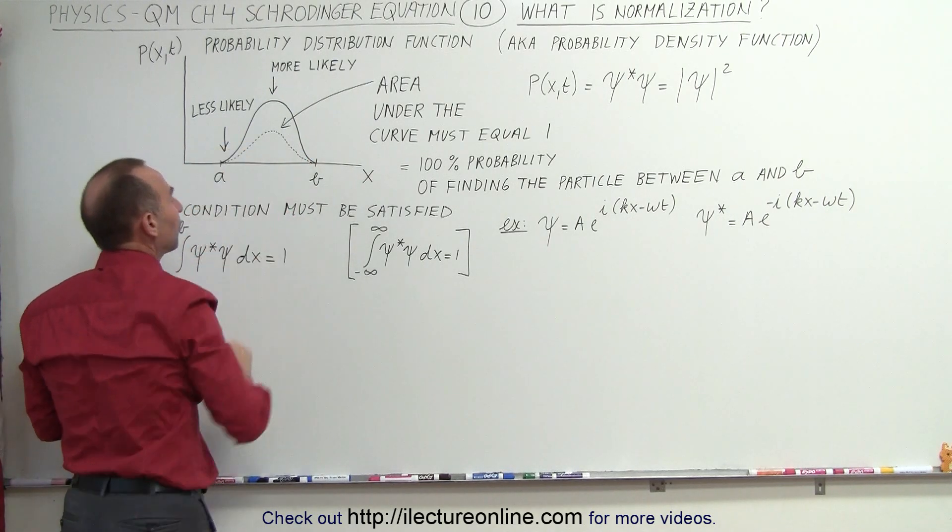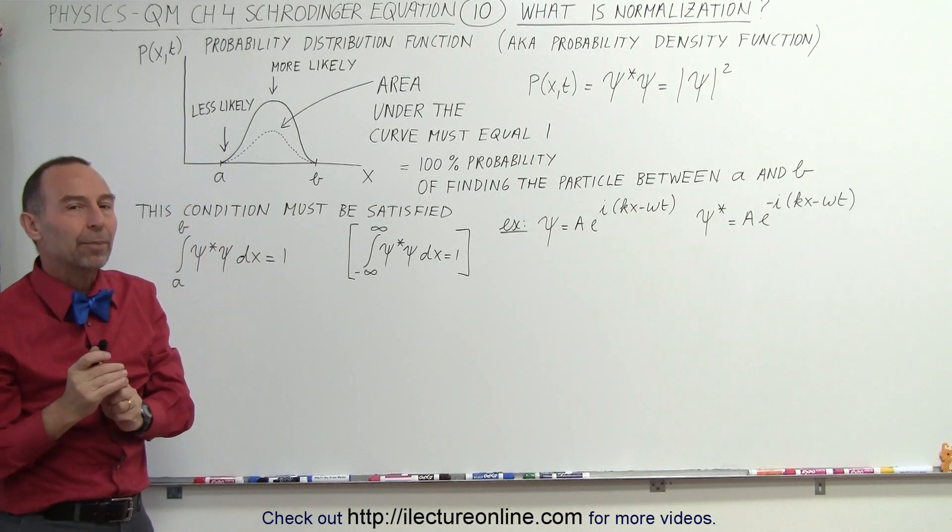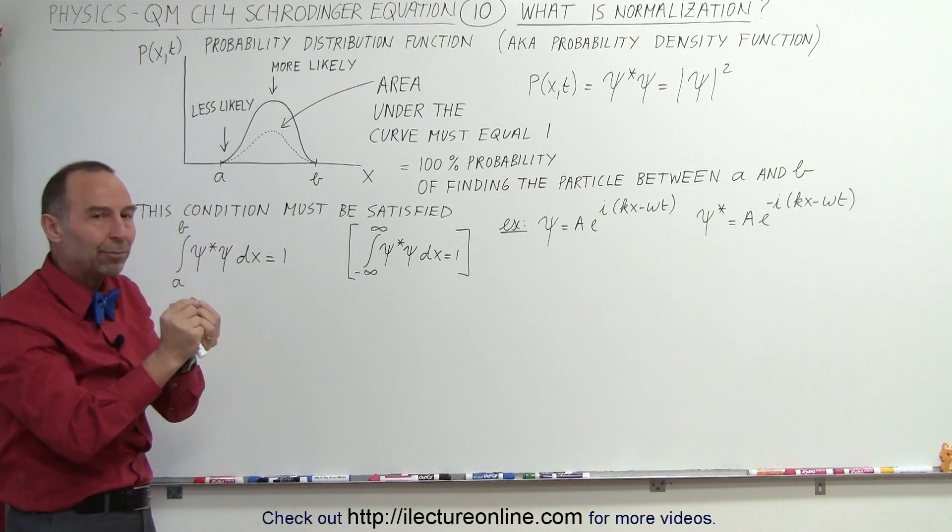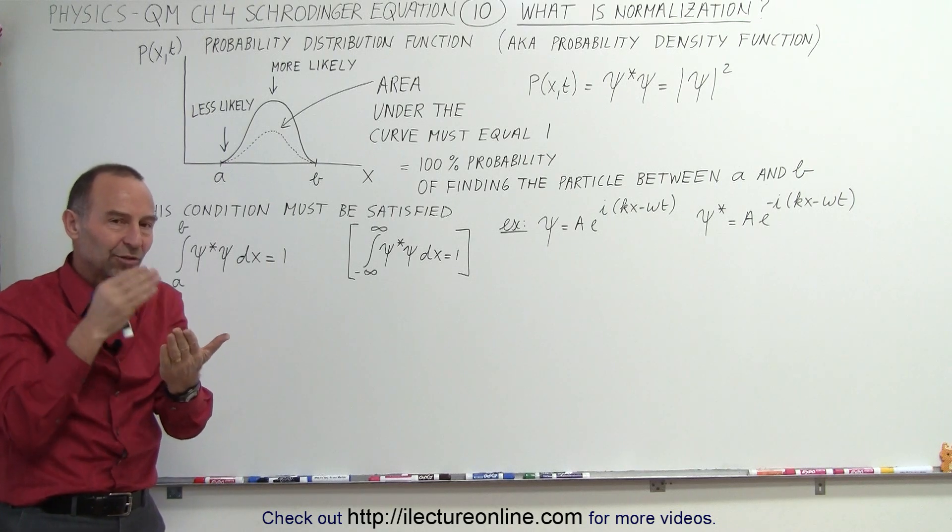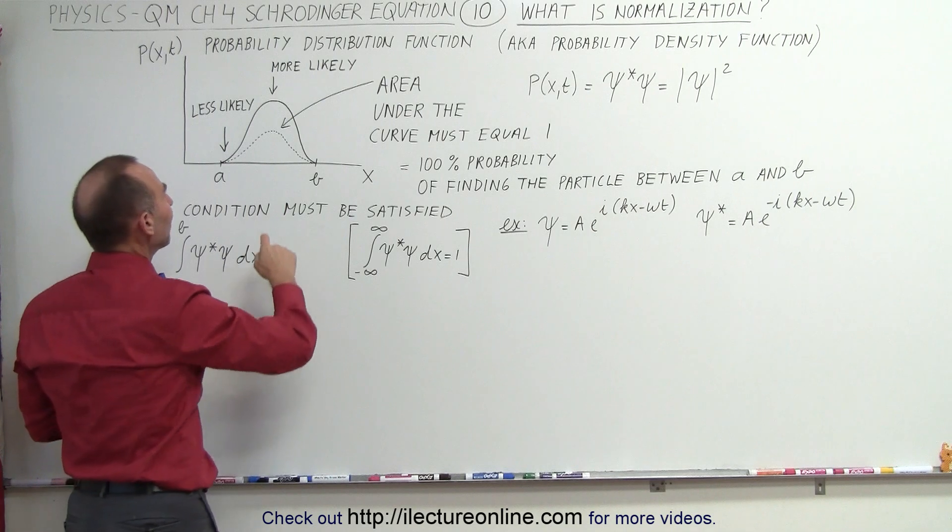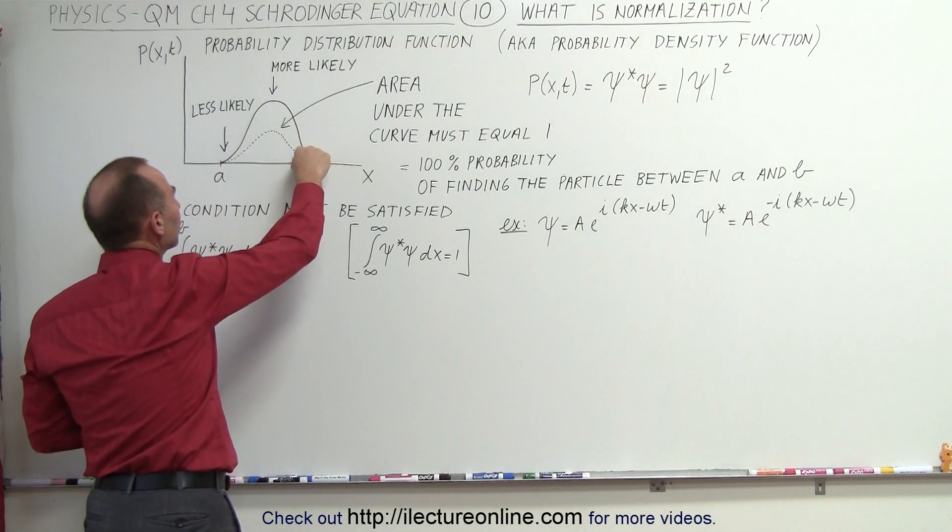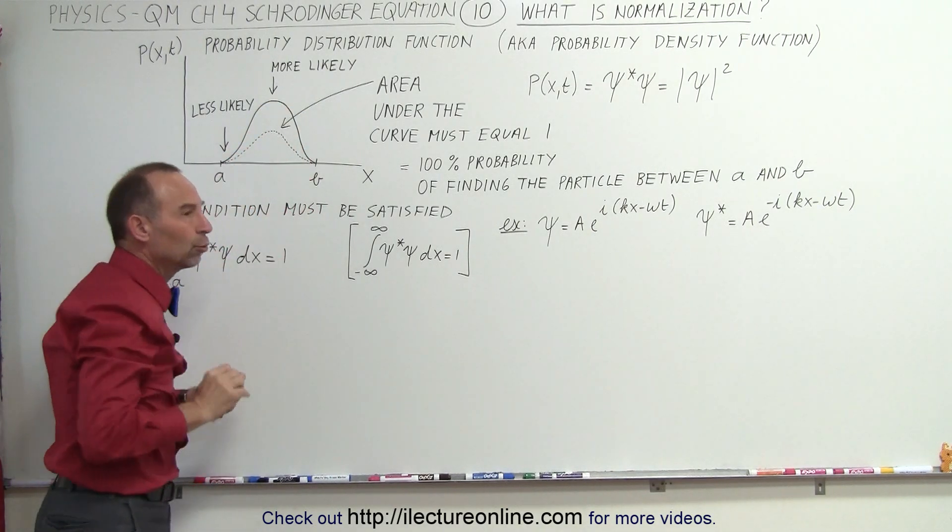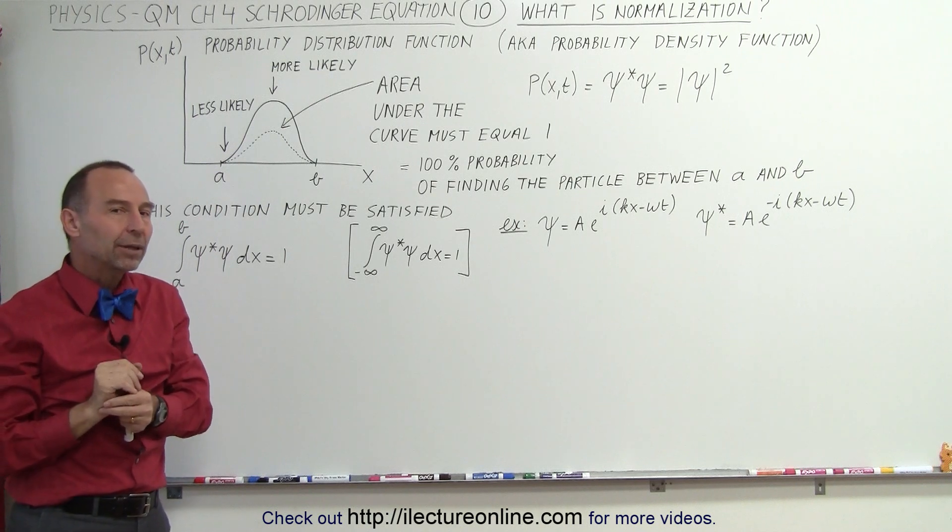And if it had a small amplitude, it was less likely to find the particle. But it was a relative number. It wasn't an absolute number. You couldn't say that it was the exact probability. The reason for that is that the curve, the area underneath the curve, should always equal 1 if we have a probability function.